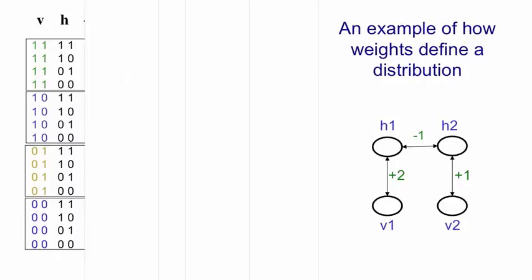Now, for each of those joint configurations, we're going to compute its negative energy, minus E. So if you look at the first line, when all of the units are on, the negative energy will be plus 2 minus 1 plus 1 is plus 2. And we do this for all 16 possible joint configurations.